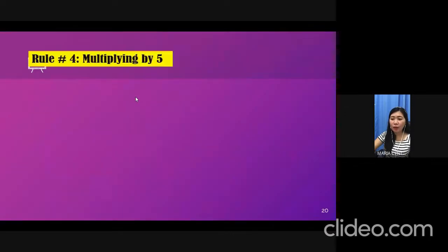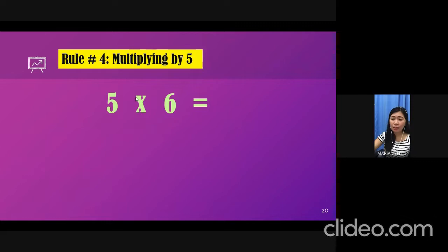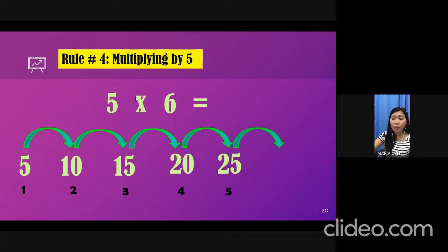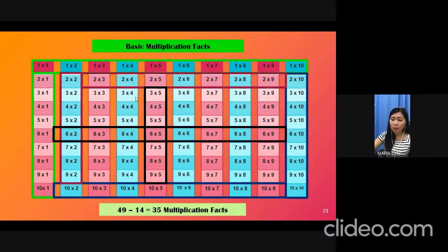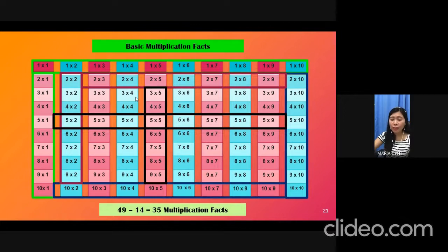Second example, we have 5 times 6. Let's skip count by 5, and we'll stop on the sixth term. Let's find out what's the product. Five, ten, fifteen, twenty, twenty-five, thirty. So, the sixth term is 30. Therefore, the product of 5 times 6 is 30. Very simple, right? From the fourth rule, you know 3 times 5, 4 times 5, 5 times 5, 6 times 5, and so on. That means you also know the reverse: 5 times 2, 5 times 3, 5 times 4, 5 times 5, and so on. That's a total of 14 multiplication facts. You now have 35 facts remaining.